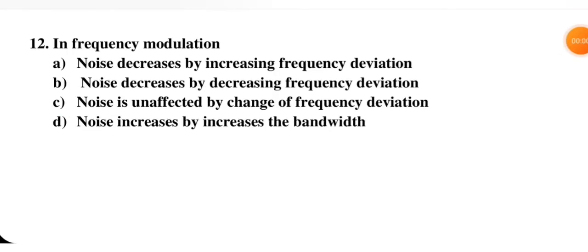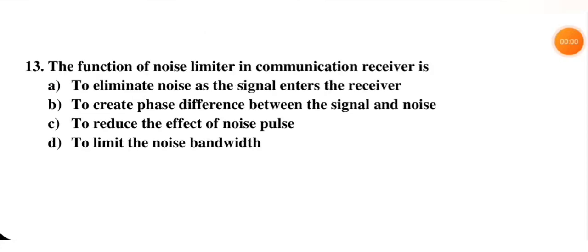In frequency modulation: noise decreases by increasing frequency deviation; noise decreases by decreasing frequency deviation; noise is unaffected by change of frequency deviation; or noise increases by increasing the bandwidth. The correct answer is A — noise decreases by increasing the frequency deviation in FM.